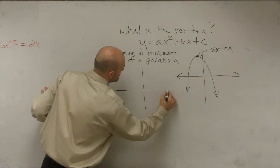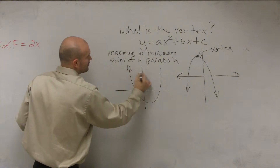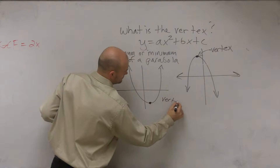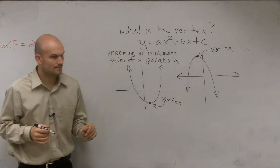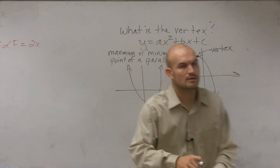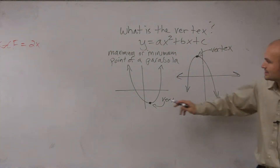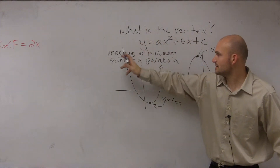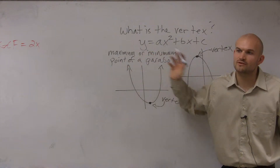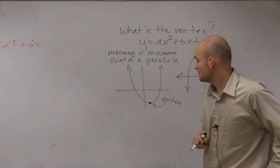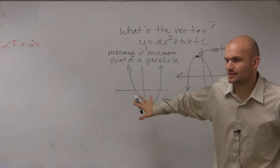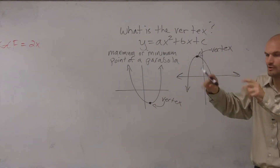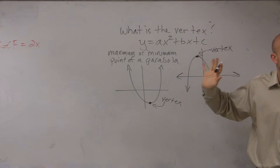If I had a parabola that looked like this, this would be the vertex. All I want you to understand is that the minimum point or the maximum point is what we call the vertex. The vertex is the maximum or minimum point of the parabola — basically where it begins. We're going to learn how to find the vertex. When you visually look at a graph, the vertex is the minimum or the maximum point.